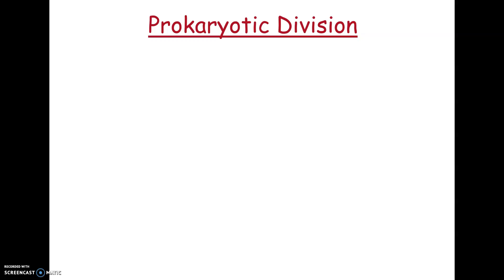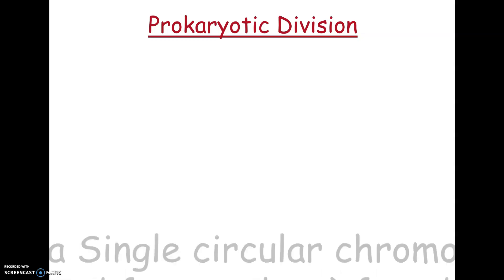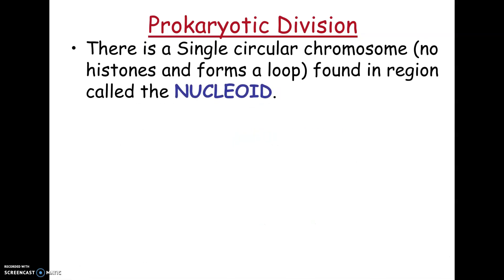Prokaryotes, which is bacteria, reproduce in a different way than eukaryotic cells. All the stuff that we've been talking about — mitosis and spindle fibers and all of that — applies to eukaryotic cells only. Remember, that would be all the kingdoms except for those kingdoms that involve bacteria.